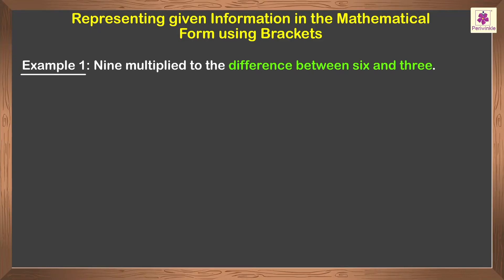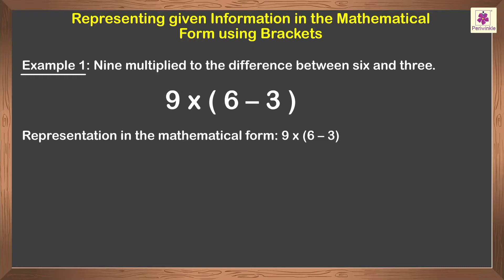It can be represented as 6 minus 3. As this is a separate expression, we keep it enclosed in brackets. When we multiply 9 by this expression, we get the mathematical form as 9 multiplied by (6 minus 3).